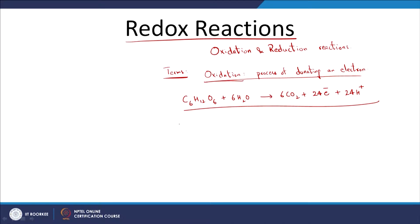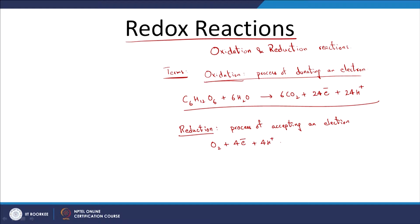Reduction is the inverse of oxidation — it is the process of accepting an electron. A relevant example involves oxygen present in the atmosphere. So more or less: oxidation is the process of donating an electron, and reduction is the process of accepting an electron. In redox reactions, both oxidation and reduction occur simultaneously.